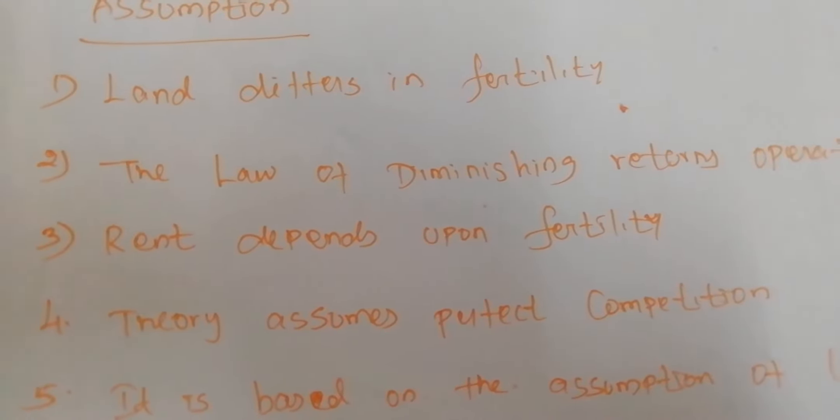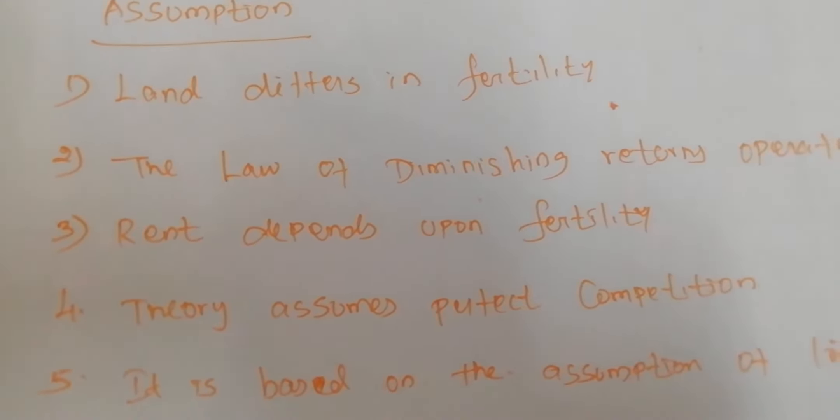There are three types of land: A, B, and C. Some people settled on a newly discovered island with three grades of land. First, people selected the A-grade land, which produces 40 bags of paddy per acre. Another group then settled on the same island, increasing demand for agricultural produce. The most fertile land alone cannot produce all the food grains needed, due to the law of diminishing returns.